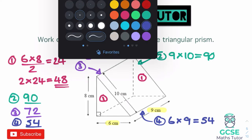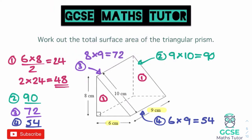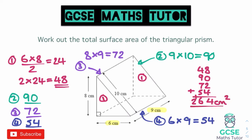Now we add all the areas together: 48 plus 90 plus 72 plus 54. Adding carefully: that comes out to 264. So the final answer is 264 centimeters squared, which is the surface area of this triangular prism. There's a little more to think about here because we had the triangular face plus three different rectangles.